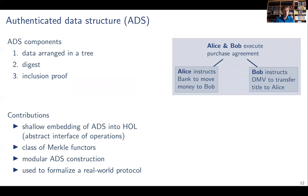What we've done is we've come up with a shallow embedding of authenticated data structures into higher order logic. Specifying abstract interface of operations and the properties. And that defines the class of Merkle functors that we've introduced, which is closed under fixed points and composition. And therefore leads to a modular construction of those authenticated data structures. To prove that this is actually usable, we actually use it to formalize a real world protocol.